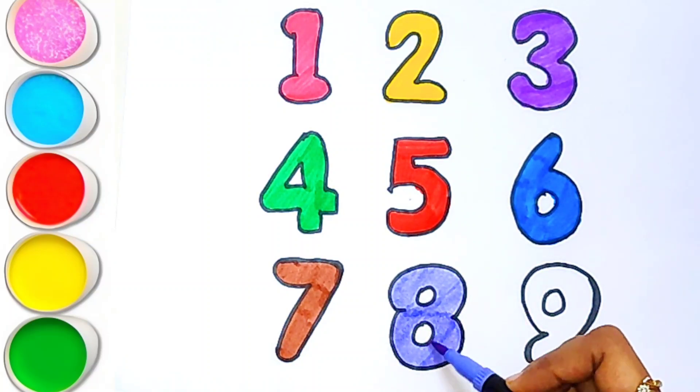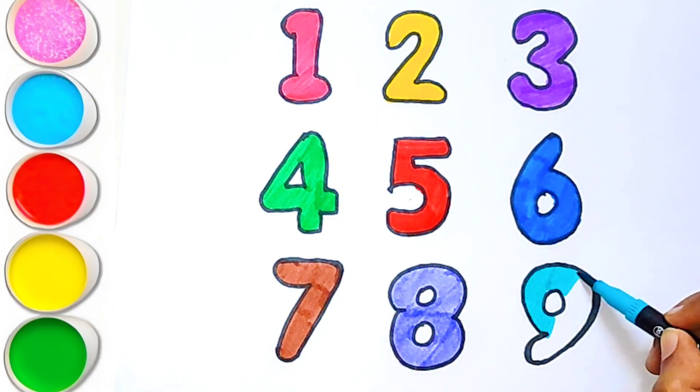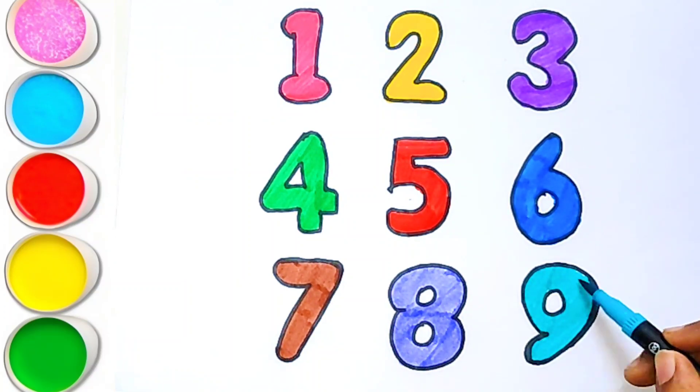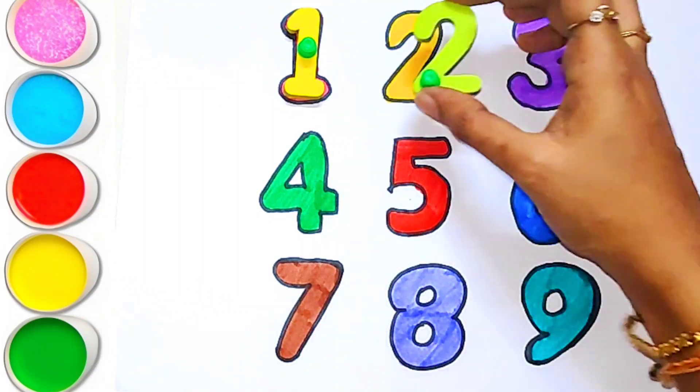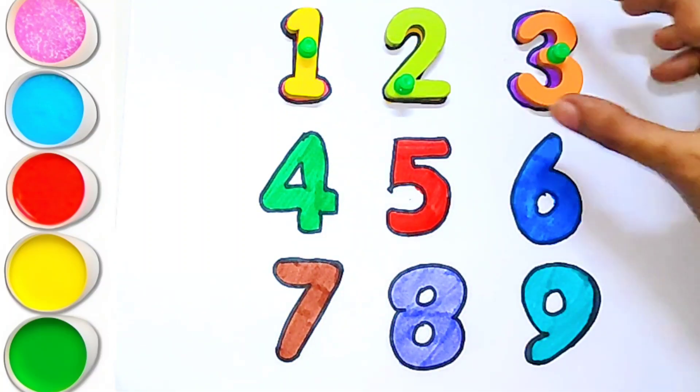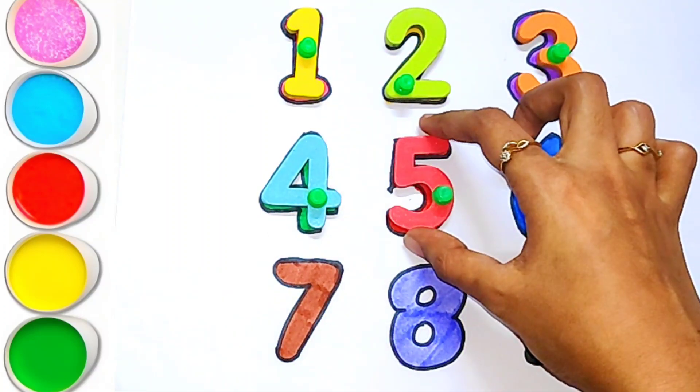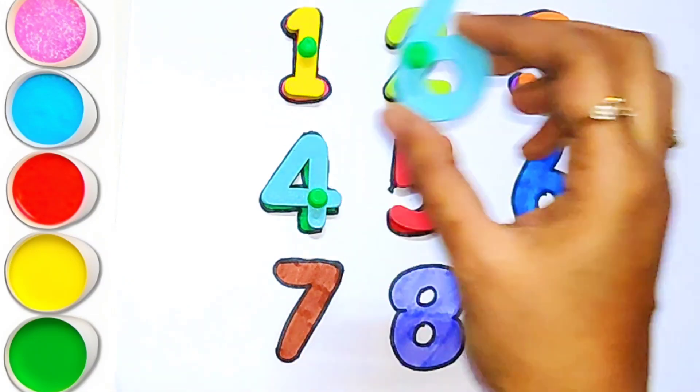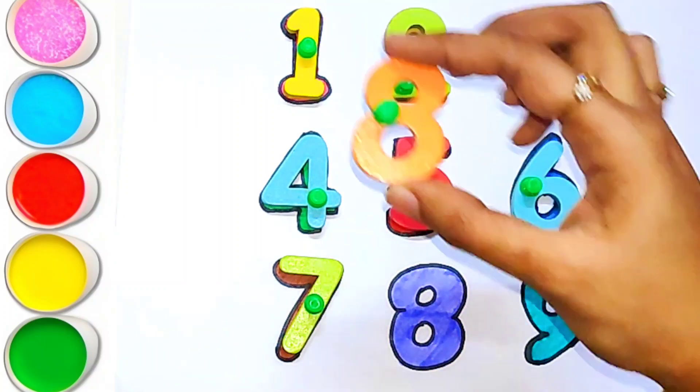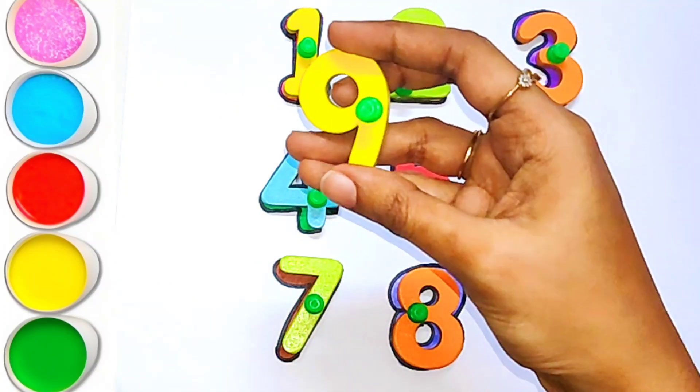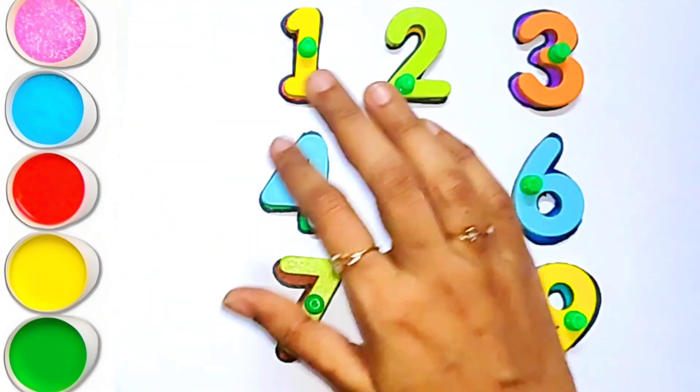This is light blue color. Number nine. One, two, three, four, five, six, seven, eight, and nine. Thank you for watching children. Please like and subscribe. Bye-bye.